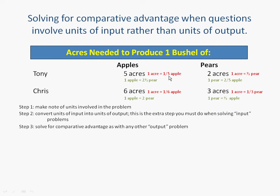We want to make that a whole apple, so we multiply by five — that gives us one apple. How many pears is he giving up? We multiply one-half a pear by five, which gives us five-halves, which is two and a half. So for every apple that Tony produces, he's given up two and a half pears. Over here, Tony has a half a pear, so we multiply by two to get one pear, and multiply the apple side by two as well. That gives us two-fifths, meaning Tony gives up two-fifths of an apple when he produces one pear.